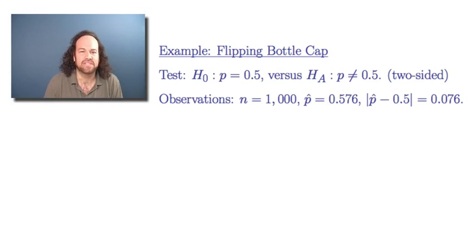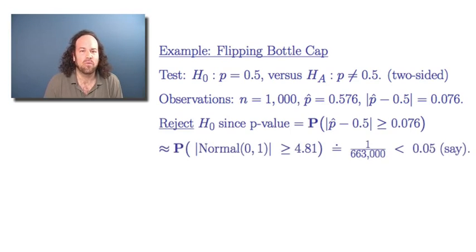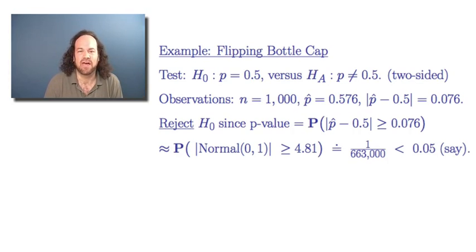We wanted to know: is that value so large that we can reject the null hypothesis? We rejected the null hypothesis because we computed the p-value — the probability that, under the null hypothesis, you would observe such a big difference between the observed fraction of reds and the hypothesized fraction of reds. We converted it via the central limit theorem to the probability that a standard normal is bigger than 4.81, which was an extremely small probability — about one chance in 650,000 — much less than a typical significance level like 0.05. So we rejected the null hypothesis.